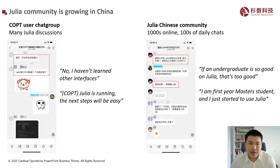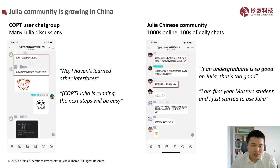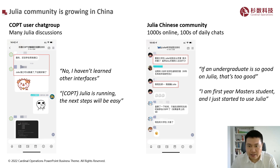I'd also like to mention that the Julia community is growing quickly in China. On the left is a screenshot of the Copt user chat group — there are many Julia discussions. One user said he hadn't learned any interfaces besides Julia, and a while later he said Copt Julia is up and running, and the next steps will be easy. On the right is a screenshot of the Julia Chinese community with thousands online and hundreds of daily chats. One user noted that if an undergraduate is so good at Julia, that's impressive — to which someone replied they are a first-year master's student who just started using Julia.